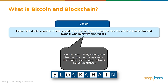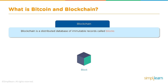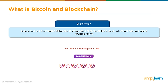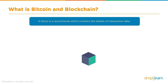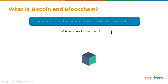Blockchain is a distributed database of immutable records called blocks, secured using cryptography. Once data is recorded, it cannot be changed — that is the attribute of immutability. A block is a record book containing transactional data. Every block is given an aggregated set of transactions to be validated, verified, and added to itself.